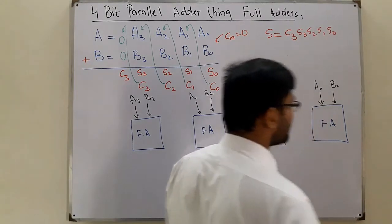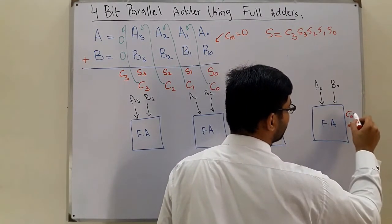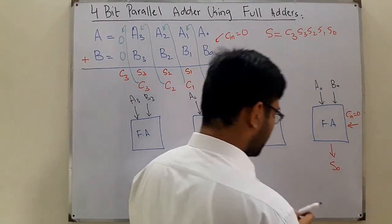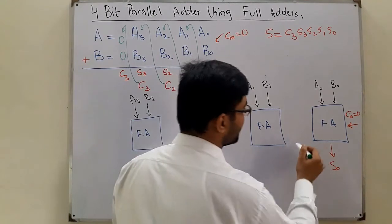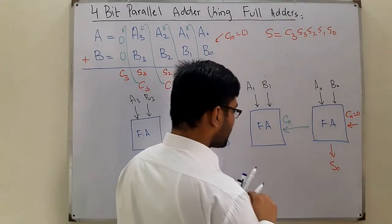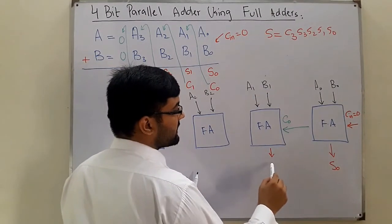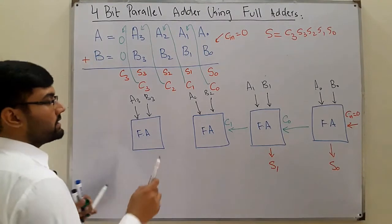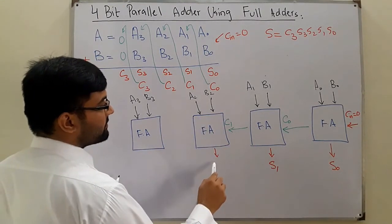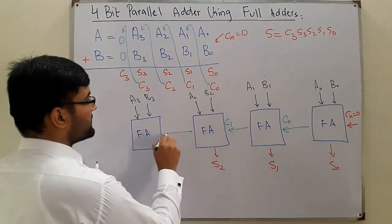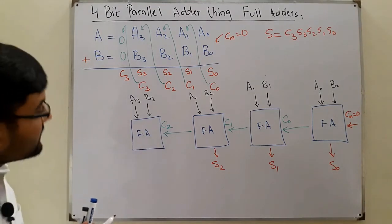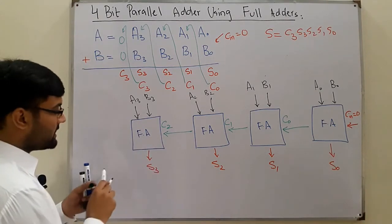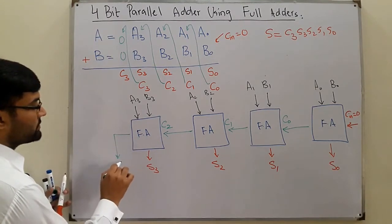In the very first full adder, the carry input is 0. It operates on a0 and b0 to give sum s0 and a carry that feeds into the next full adder. This chaining continues until the last full adder receives a3, b3, and the previous carry, giving sum s3 and a final carry c4, which is part of the overall sum.